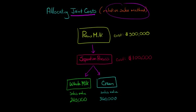Let's say that we have a dairy farm and we produce raw milk and that cost is $300,000. And then we have a separation process that costs $100,000, but it yields two joint products: whole milk and cream.